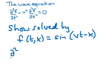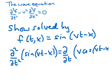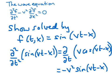Calculating the second derivative with respect to t of sin(vt − x): first we take the derivative with respect to t — differentiating sine gives cosine, and differentiating vt − x with respect to t gives v — so the first derivative is v·cos(vt − x). Differentiating again, cosine becomes minus sine and we pull out another factor of v, giving −v²·sin(vt − x). So d²f/dt² = −v²·sin(vt − x).